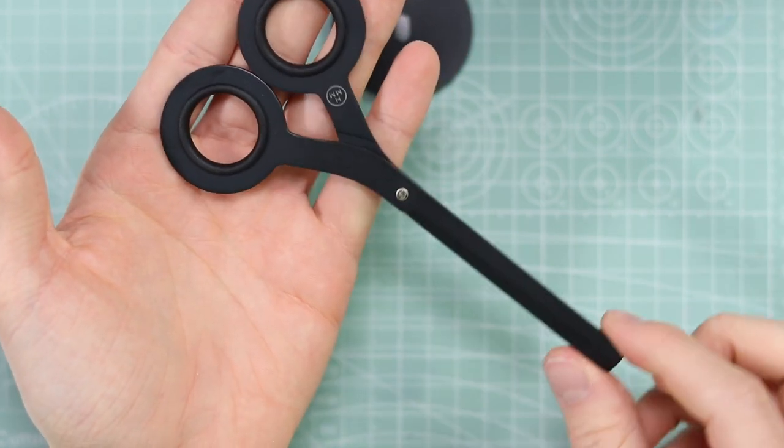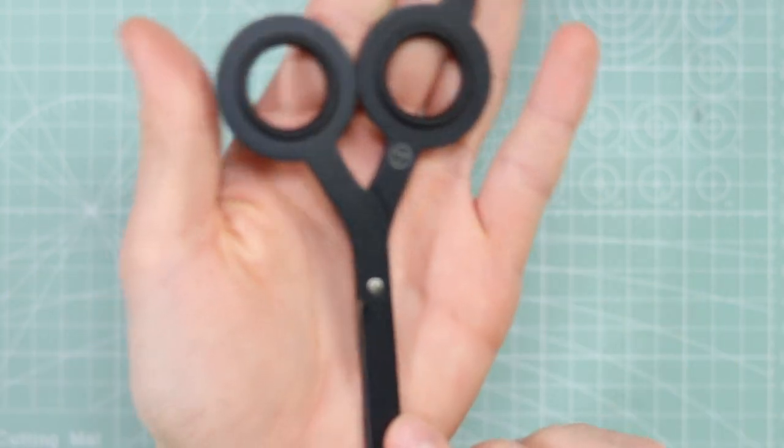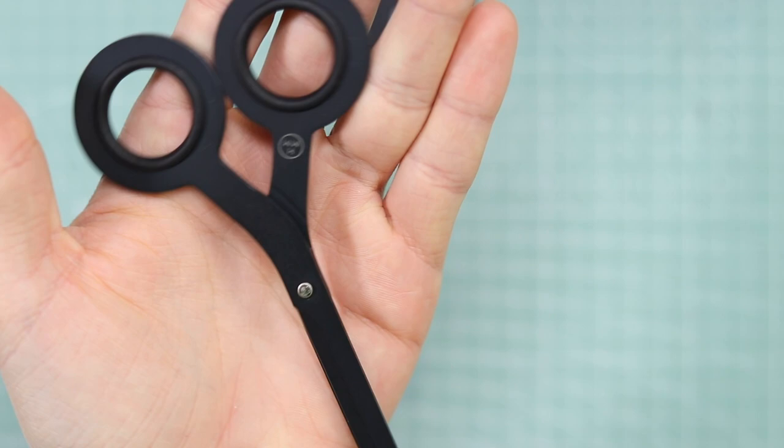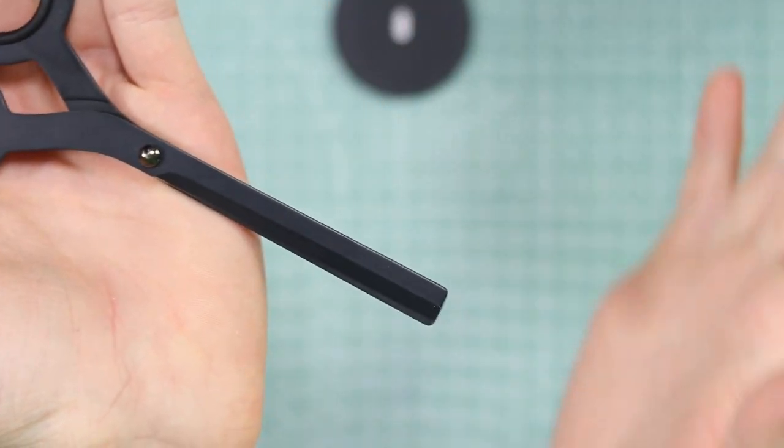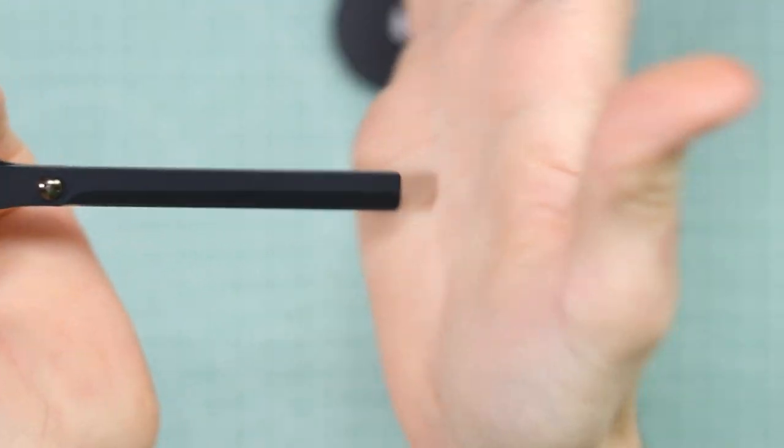Here are the scissors themselves. The first thing you'll notice is they are incredibly sleek. There's very little on them at all. There's a small bit of branding there, the HMM logo, and on the back it's up there as well.